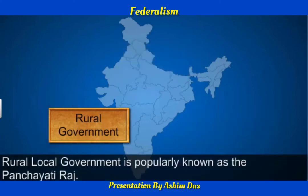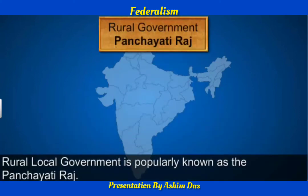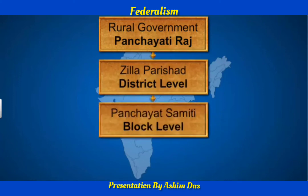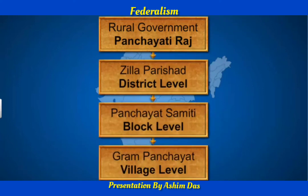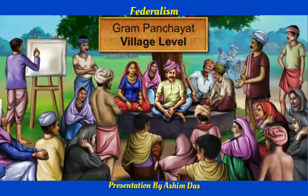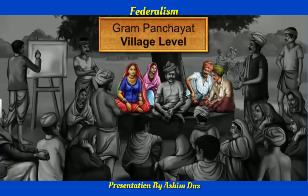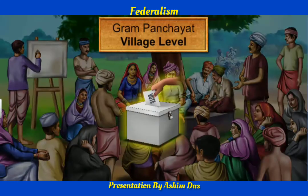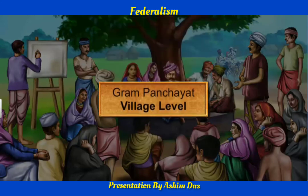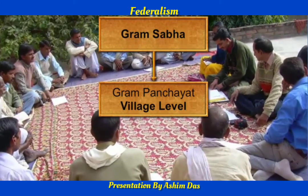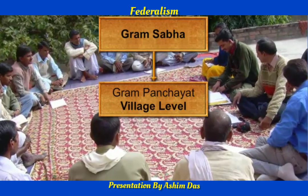The rural local government, popularly known as the Panchayati Raj, consists of the Zila Parishad, the Panchayat Samiti, and the Gram Panchayat. The Gram Panchayat is a decision-making body present in each village or group of villages, consisting of ward members called Panch and a president called Sarpanch, who are directly elected by the adults of the ward or village. The Gram Panchayat works under the supervision of the Gram Sabha, which consists of all voters in the village and meets two or three times a year to approve the annual budget and review performance.